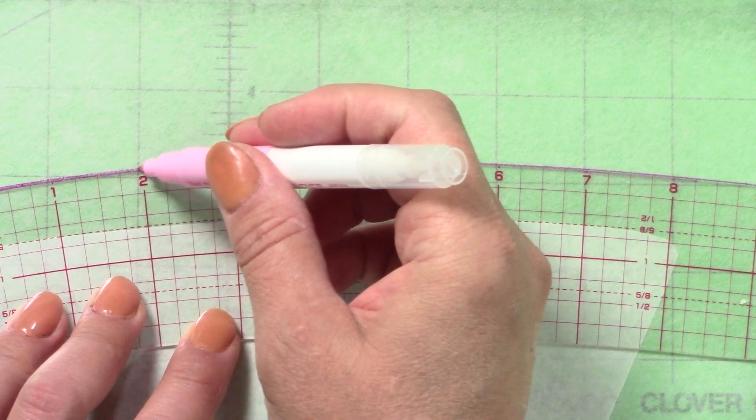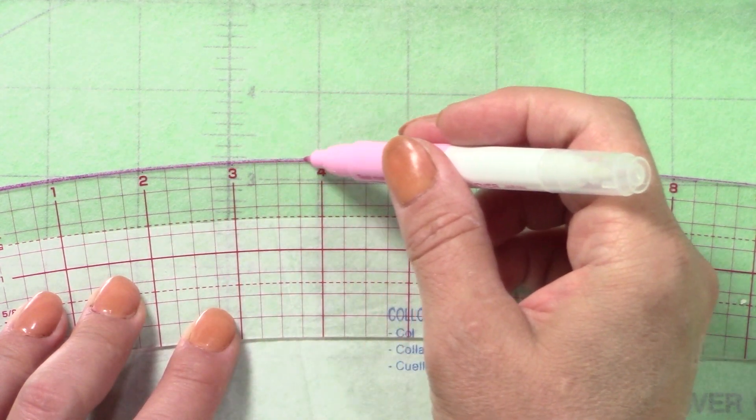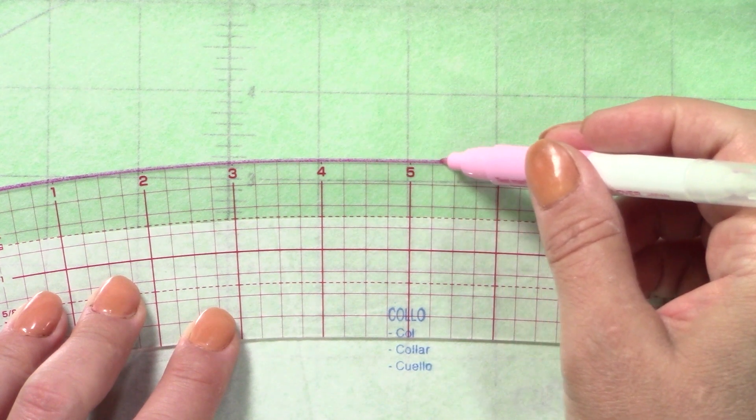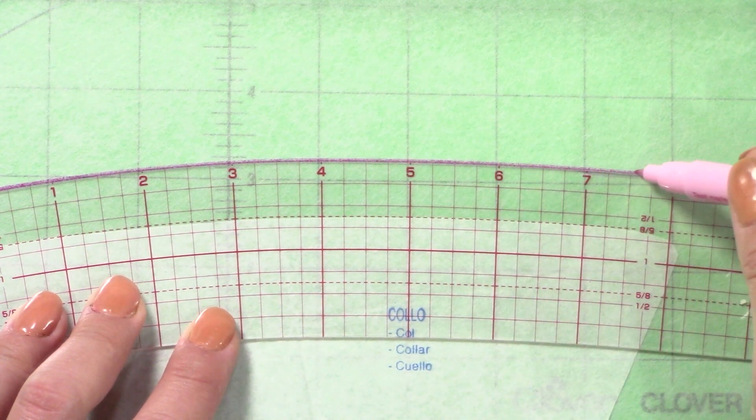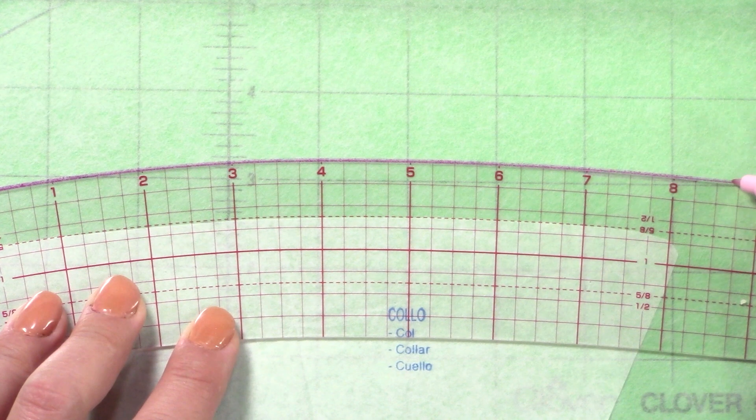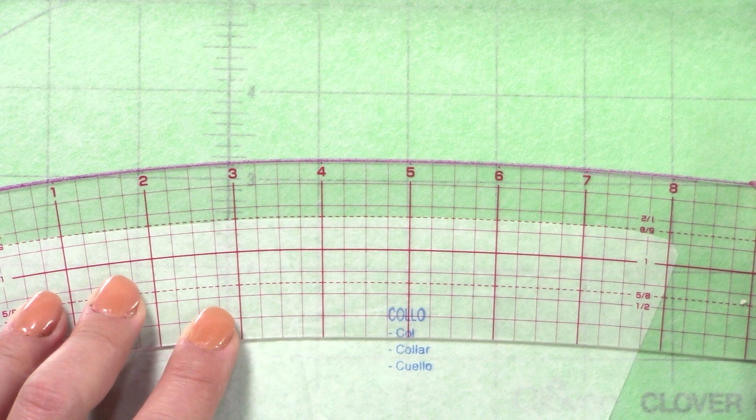The transparent nature of the Curve Ruler with Mini Rulers set makes it simple to add varying widths of seam allowances or draft from point to point with ease, unlike traditional metal rulers.